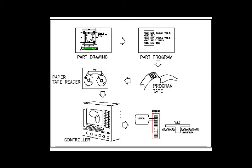In the part drawing, dimensions, tolerances, and manufacturing notes are given. The part drawing is prepared with the help of CAD software. After the part drawing comes part programming, and this part program is sent to the controller through a program tape to a paper tape reader. The controller then controls the movements, sending signals through a gearbox to the table, controlling its movement.